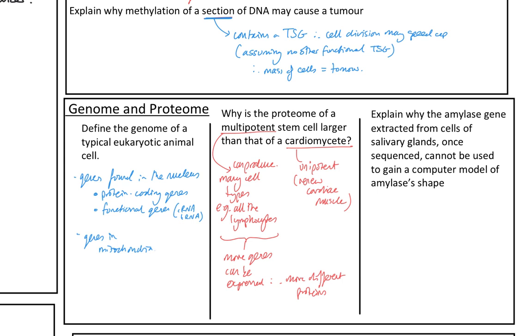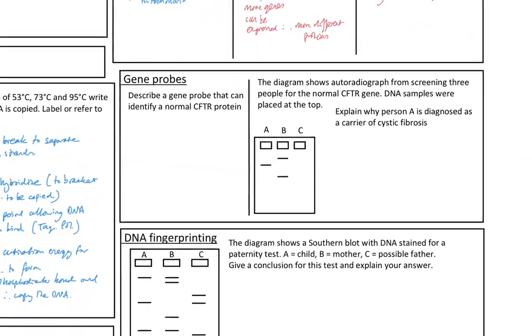And then explain why the amylase gene extracted from cells of salivary glands one sequence cannot be used to gain a computer model of amylase shape. So this is just coming from about how we relate genome to proteome. That we can, you know, we know the, because this is a universal code, I know what codes code for what amino acids. And we can model how different amino acids in what sequence will form what shape. However, it's this problem they get about introns. So the gene is made of introns and exons. And only exons code. Code for protein. So we'd have to actually use the cDNA method. Would be a better way of doing that. That one.